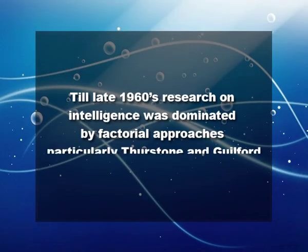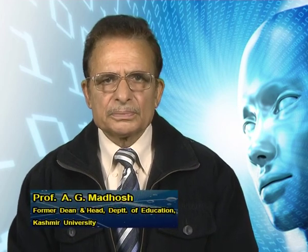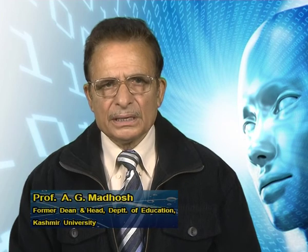I have made a very brief treatment of the theories of intelligence. I hope that once you go through the references given along with this lecture, you will have more detailed accounts. Now let me conclude. Till the late 1960s, research on intelligence was dominated by factorial approaches, particularly Thurstone and J.P. Guilford. Later on, the development of cognitive psychology influenced intelligence research, so that information processing models impacted strongly the concept of intelligence as a trainable, educational, and improvable human ability.